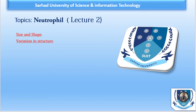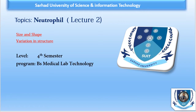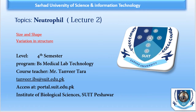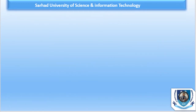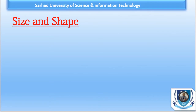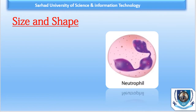Today we are going to discuss the normal size and shape of neutrophils, and keeping that in mind we also have variation in structure — both normal and abnormal variation. Normal variations include band cells, segmented cells, and Barr bodies, also called drumsticks. This lecture is for fourth semester BS Medical Laboratory Technology. My name is Tanvir Tara, lecturer at Serhat University of Science and Information Technology.